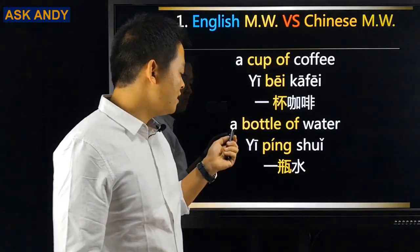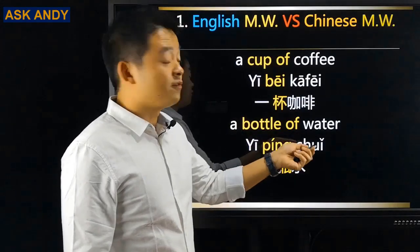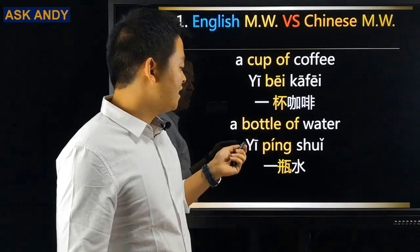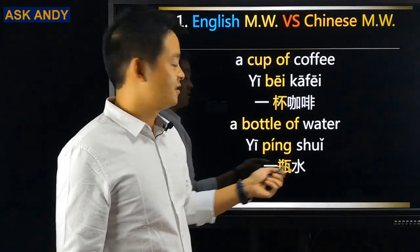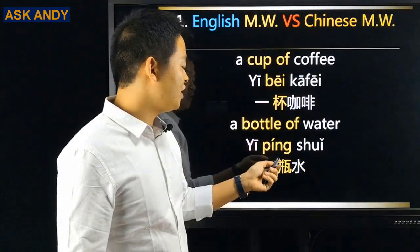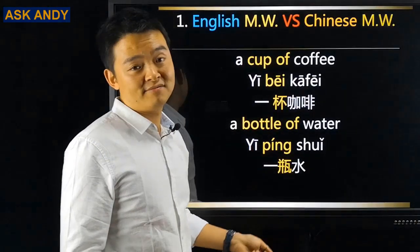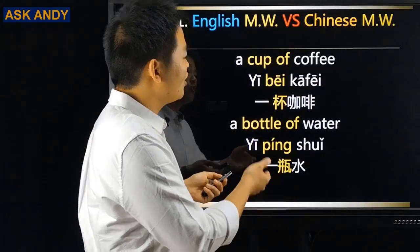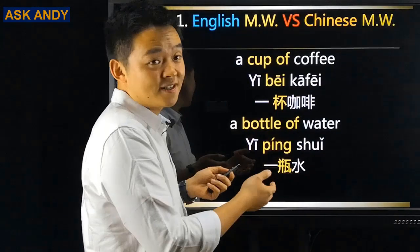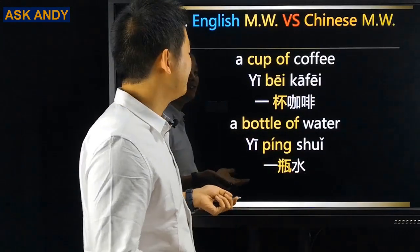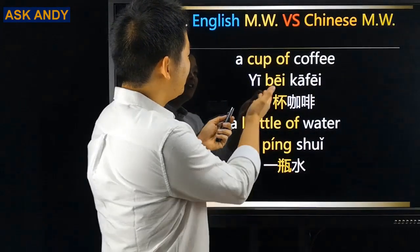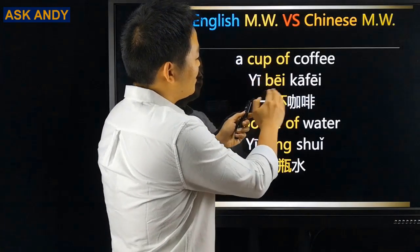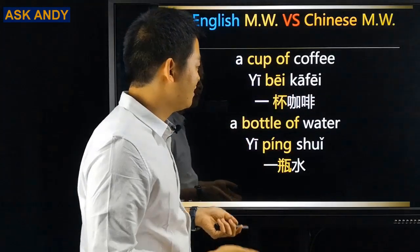And then 'a bottle of water' — in Chinese we say 一瓶水. Almost the same. So in this case, English measure words and Chinese measure words are easy, right?